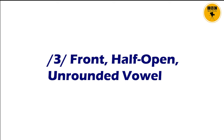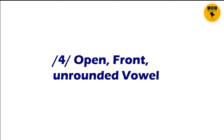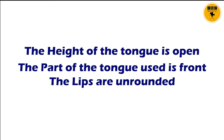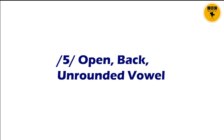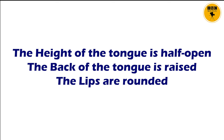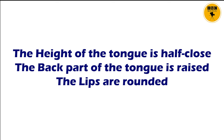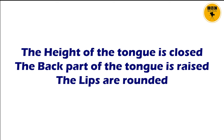Cardinal number 3 is a front, half open, unrounded vowel — the front of the tongue is raised, height is half open, and lips are unrounded. Cardinal number 4 has the tongue height open, tongue part front, and lips unrounded. Cardinal number 5, as you can see on your screen, is an open back unrounded vowel — height open, back of tongue raised, lips unrounded. Cardinal number 6 is half open, back, rounded — height half open, back of tongue raised, lips rounded. Cardinal number 7 has height half close, back of tongue raised, and lips rounded. Cardinal number 8 is a close back rounded vowel — height close, back of tongue raised, lips rounded.